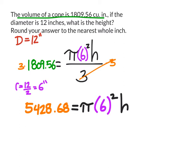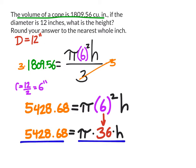Next, I'm going to take 6 to the power of 2 and square it, which gives us 36. To get h by itself, I'm going to divide by pi times 36. So over here, I'm going to divide by pi times 36 as well.